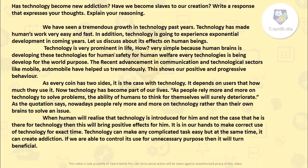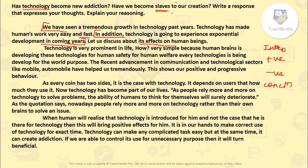The third essay topic is: 'Has technology become a new addiction? Have we become slaves to our creation? Write a response expressing your thoughts and explaining your reasoning.' Again, we use four parts: introduction, positive points, negative points, and conclusion. In the introduction, I have told what technology is and how it has grown enormously in recent years — technology has made human work very easy and fast, and it is going to experience exponential development in coming years.